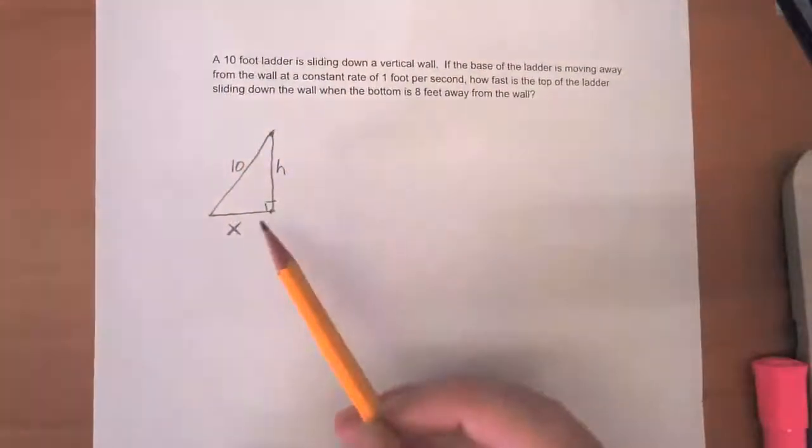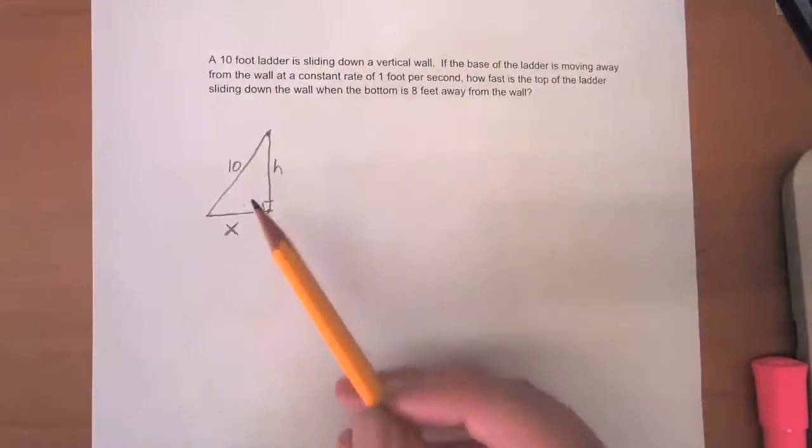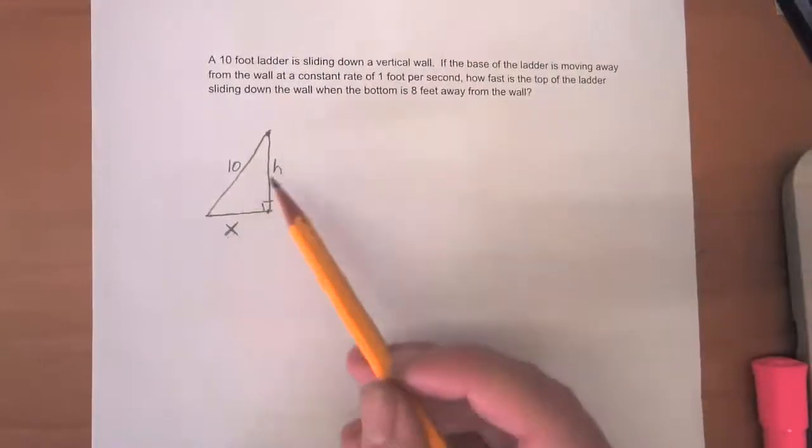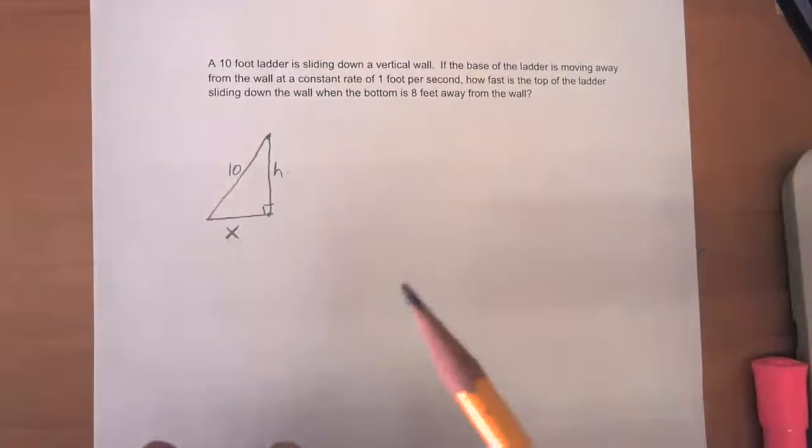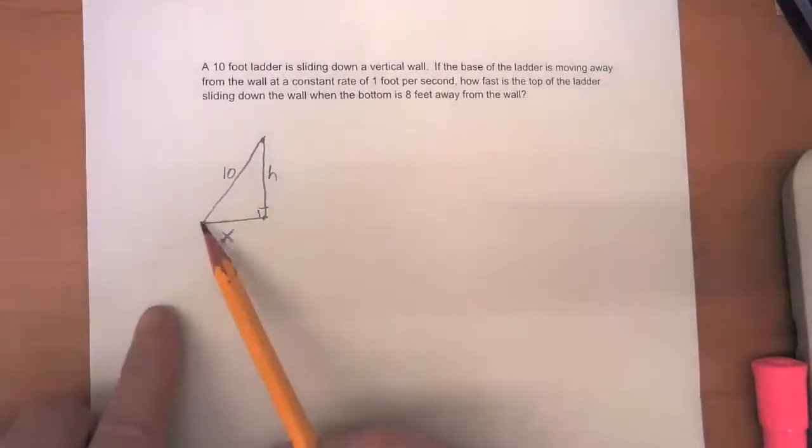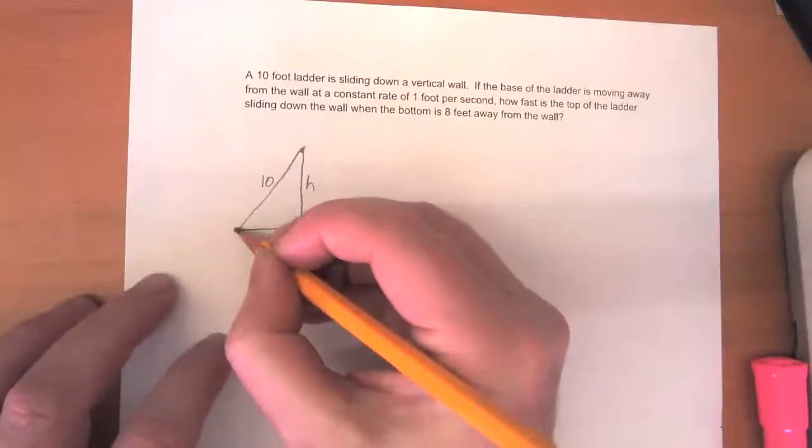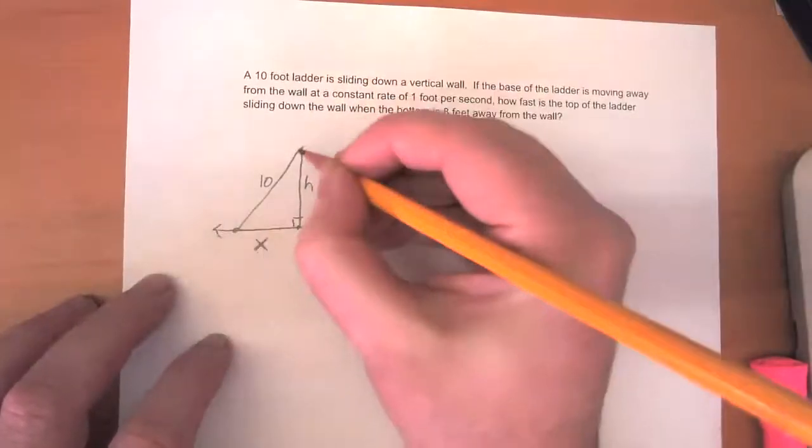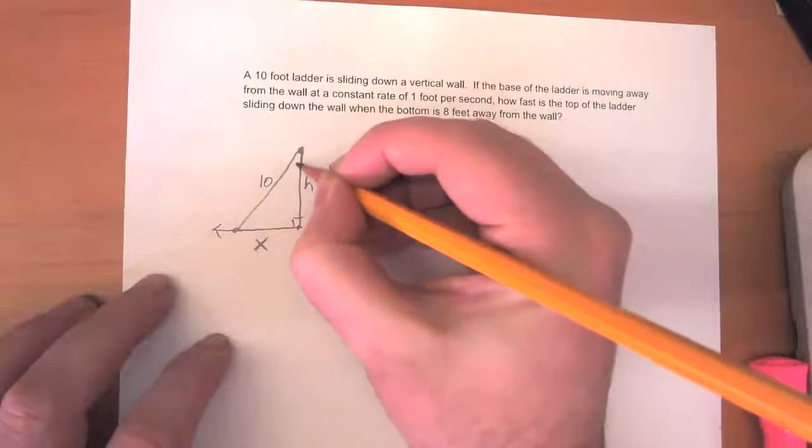So the ladder is 10 feet long, but this X and H, these aren't really numbers. These are functions because at different times this point is going to be moving this way, and this point is going to be moving down.